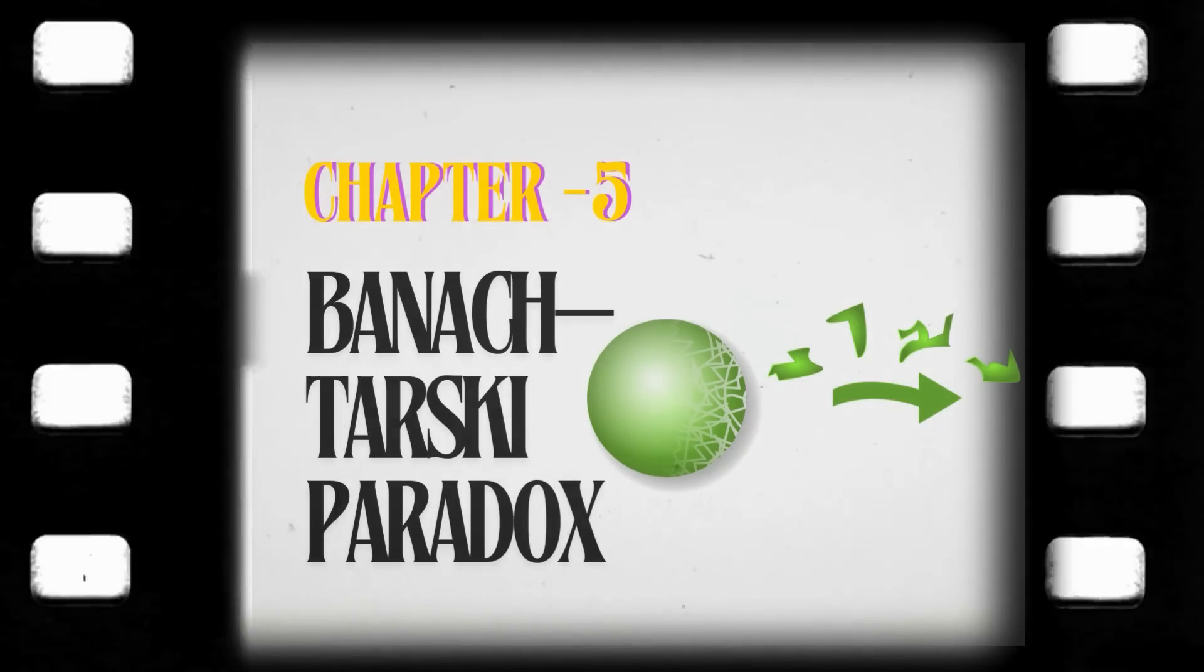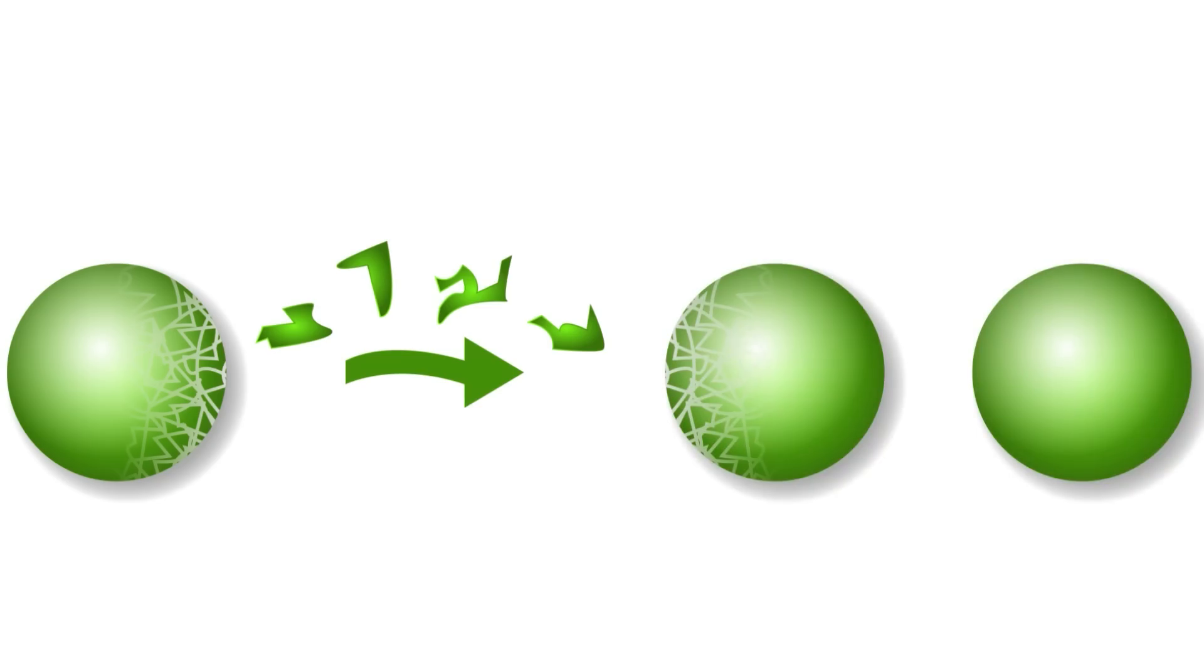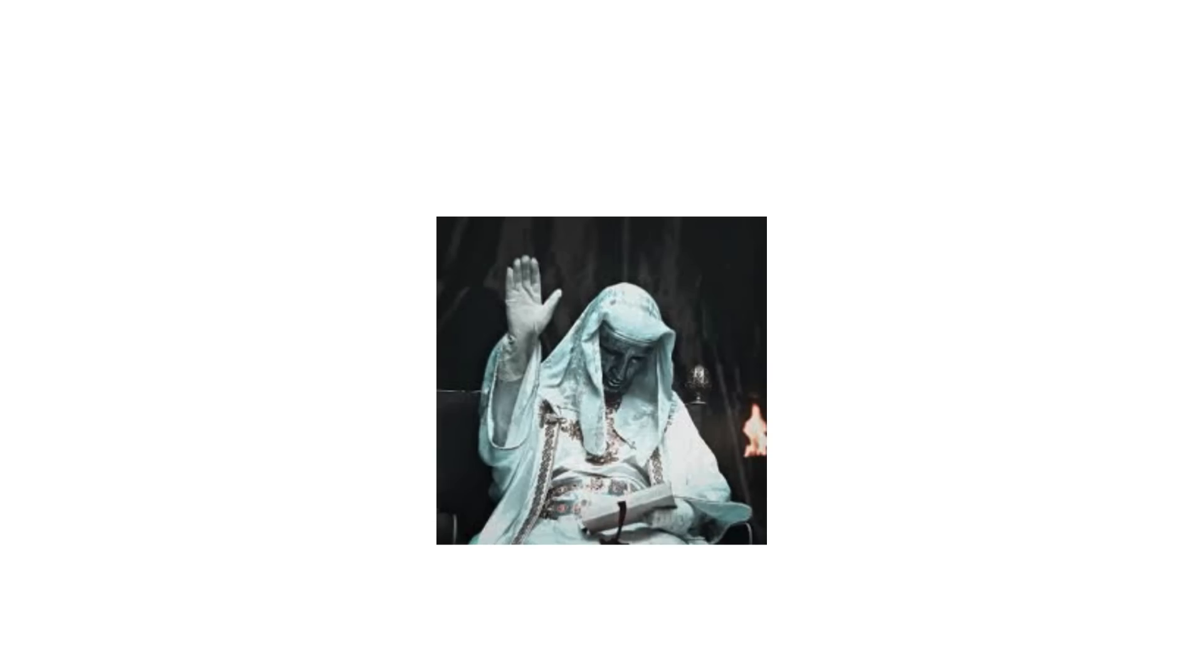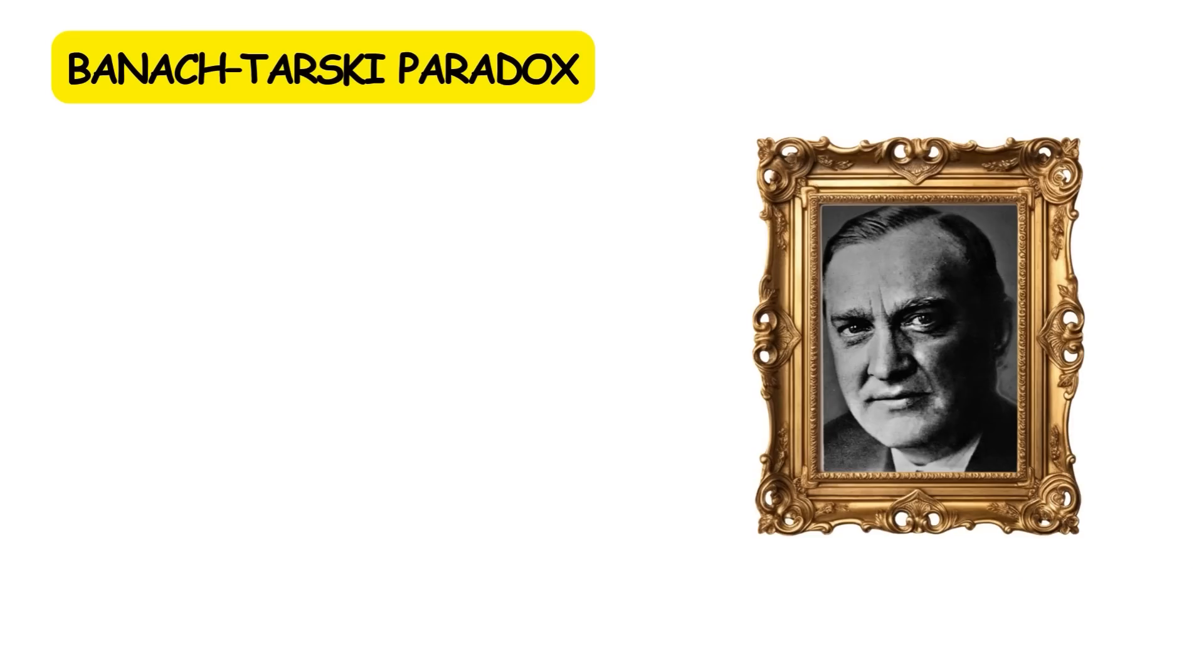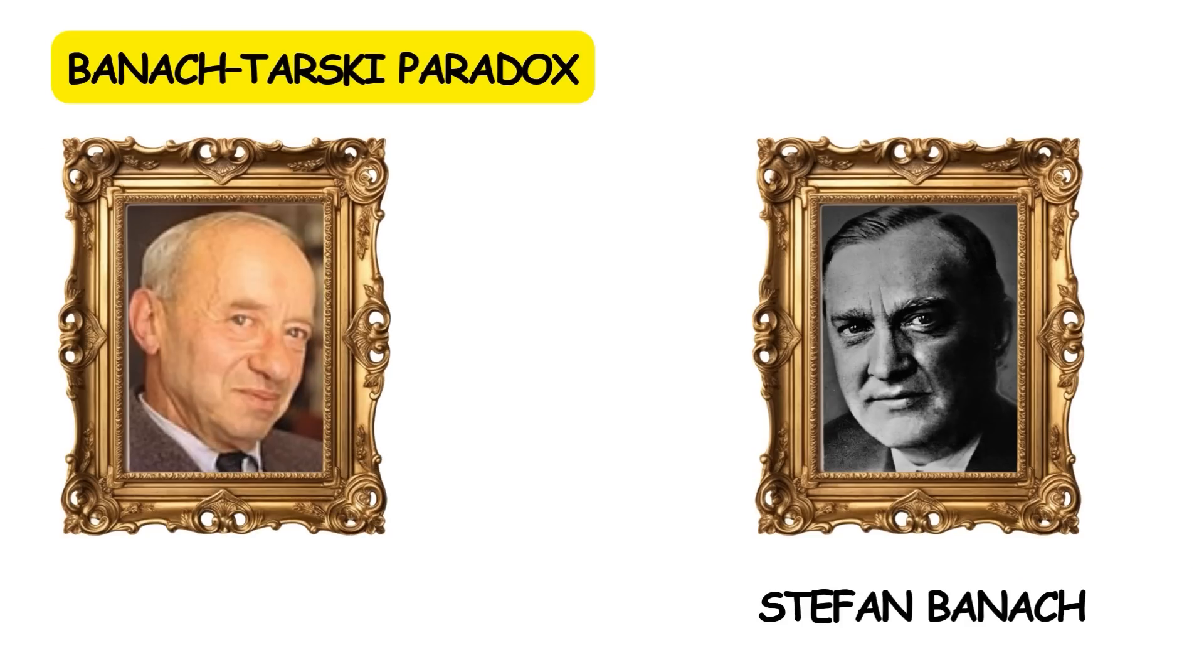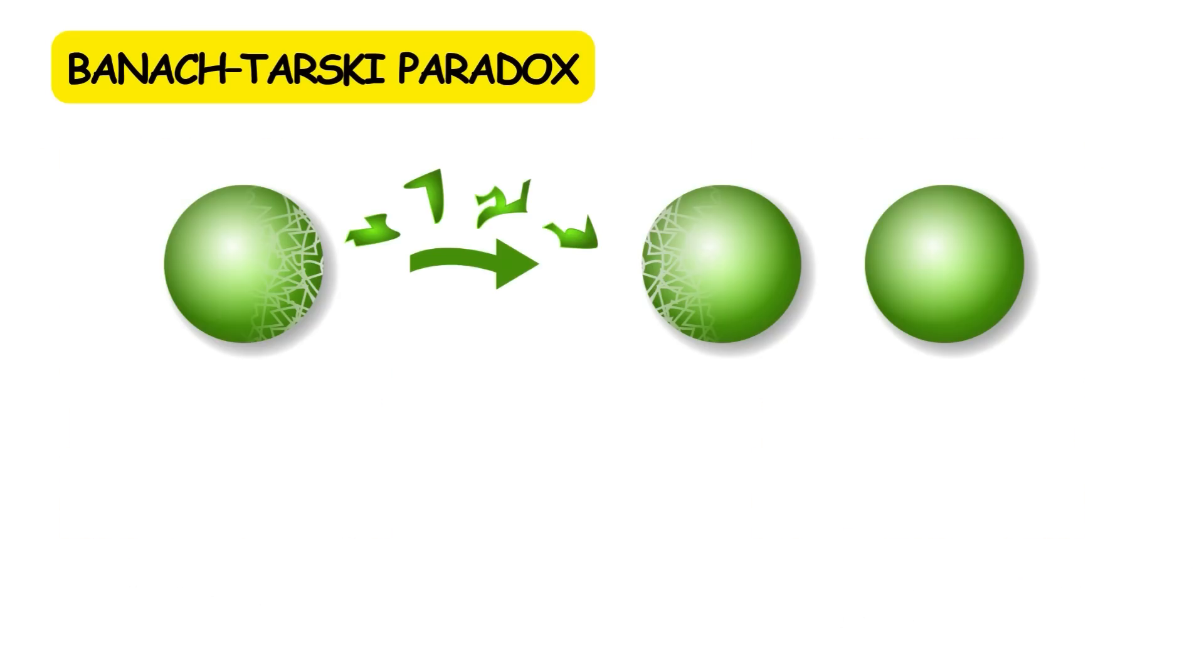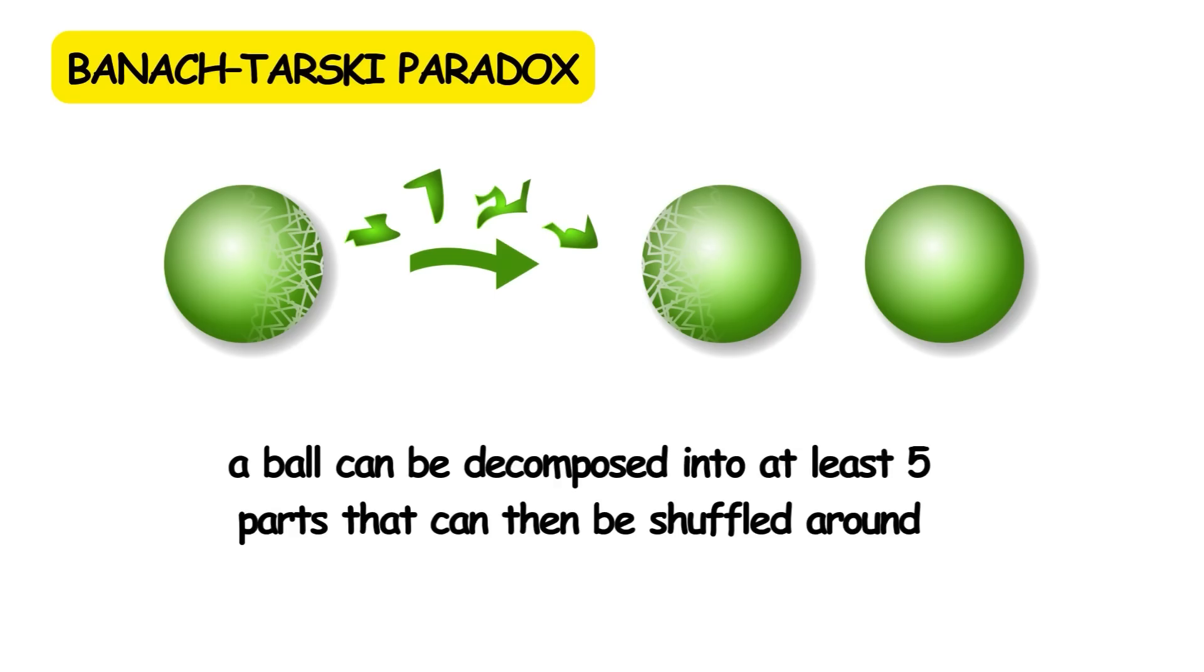Banach-Tarski Paradox. Can you split an object into parts, and then use just those parts to construct two identical copies of the original object? In the real world, no. Not to our knowledge. But in the world of math, assuming certain rules, the answer is yes. The Banach-Tarski Paradox, proven by Polish mathematician Stefan Banach and Polish-American mathematician Alfred Tarski, states that a ball can be decomposed into at least five parts, that can then be shuffled around to form two balls identical to the original.